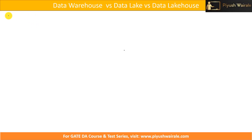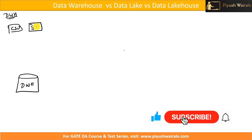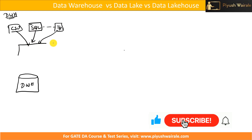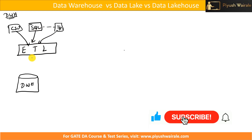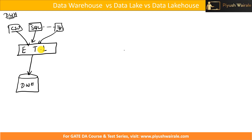In the previous lecture we discussed about data warehouse. We have a data warehouse with data coming from multiple inputs, for example CSV, SQL databases, or other types of input. In the case of data warehouse, we extract the data from multiple sources, then we apply the ETL process — Extract, Transform, Load — transforming the data into a required format before loading it into a data warehouse.